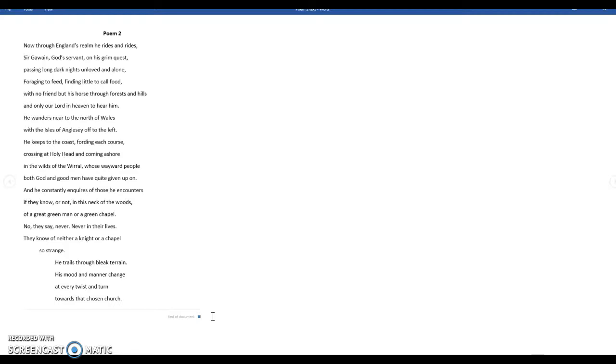passing long dark nights, unloved and alone, foraging to feed, finding little to call food, with no friend but his horse through forests and hills, and only our Lord in heaven to hear him. So if I just stop there, what do we have? Do we have any evidence in the first bit of the poem I've read about how he feels?